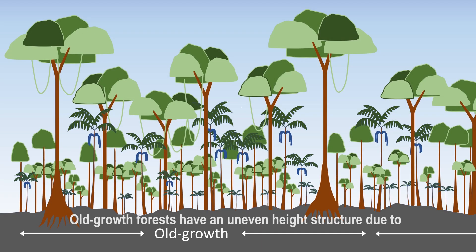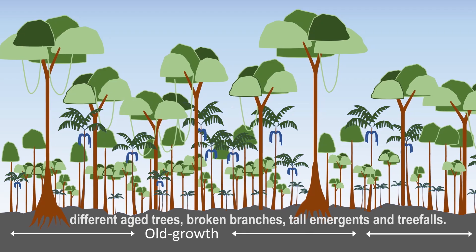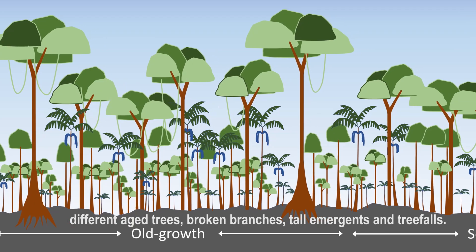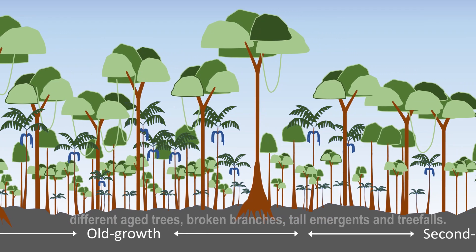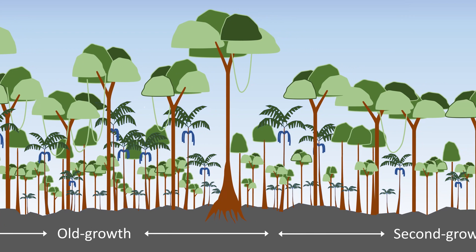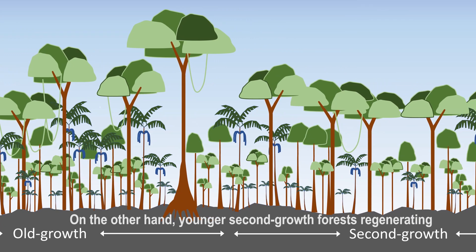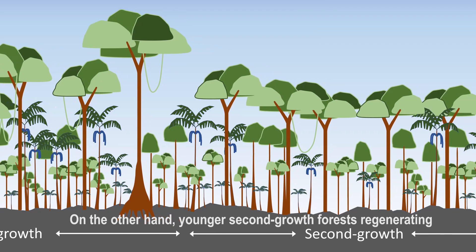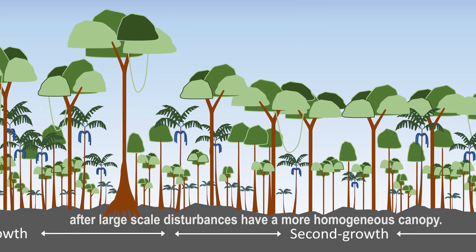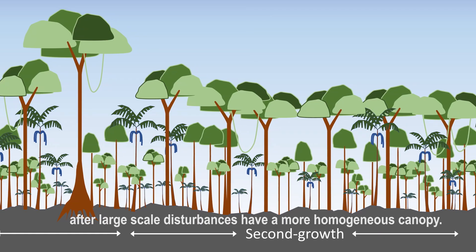Old growth forests have an uneven height structure due to different age trees, broken branches, fascinatingly tall emergent trees, and tree falls. On the other hand, younger second growth forests regenerating after disturbance have a more homogeneous canopy and tree falls are less frequent.